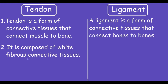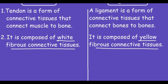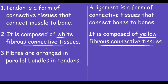Moving on to the next point: a tendon is composed of white fibrous connective tissue, while a ligament is composed of yellow fibrous connective tissue.